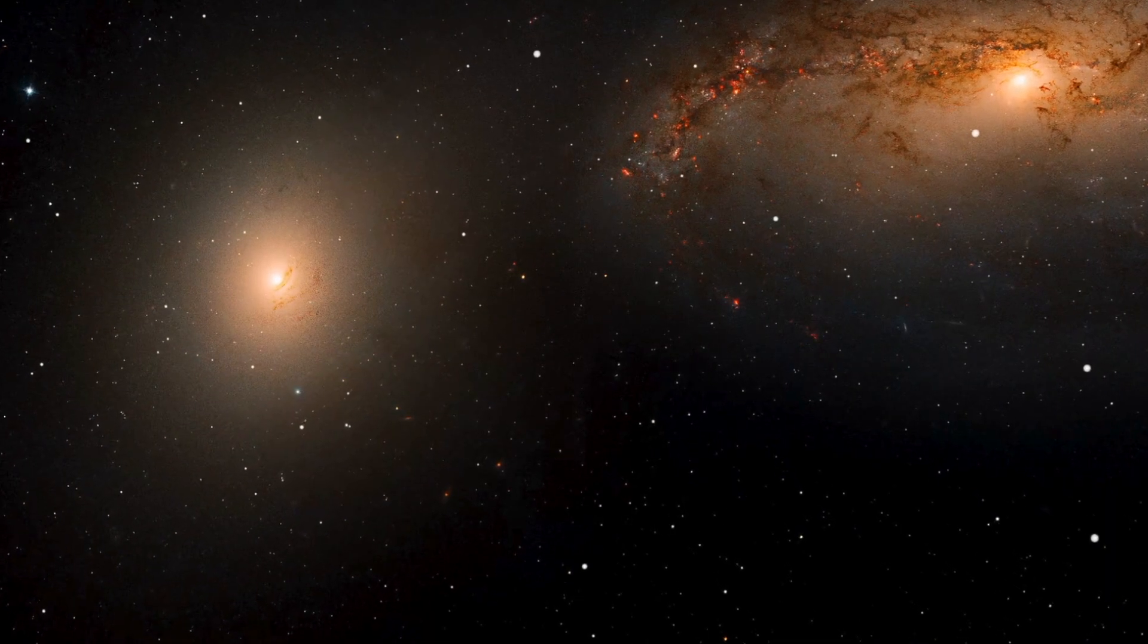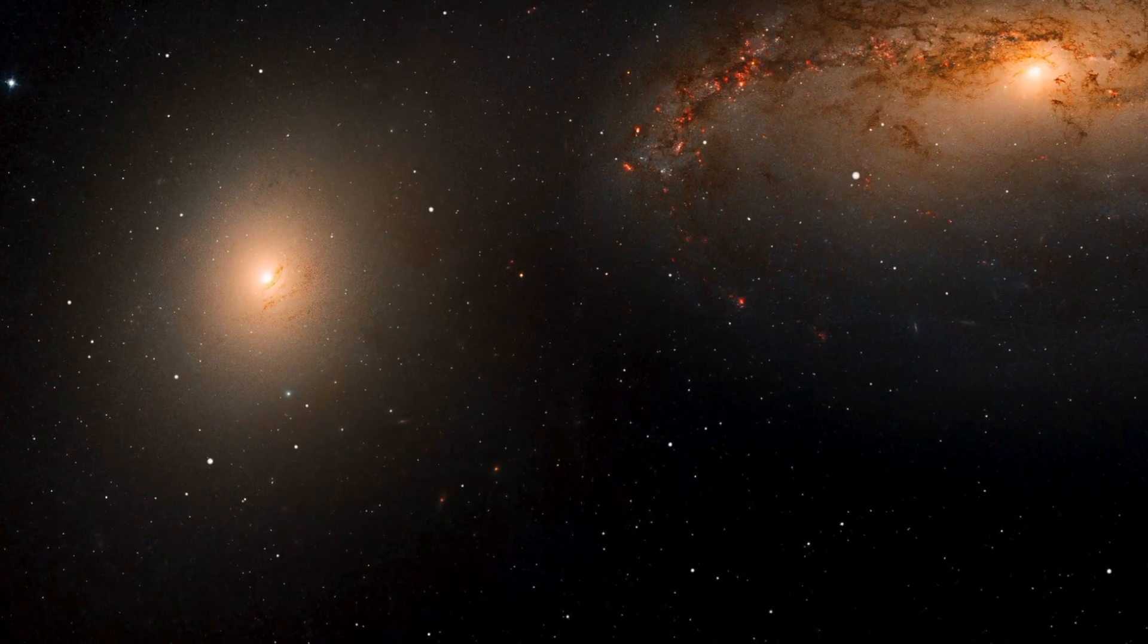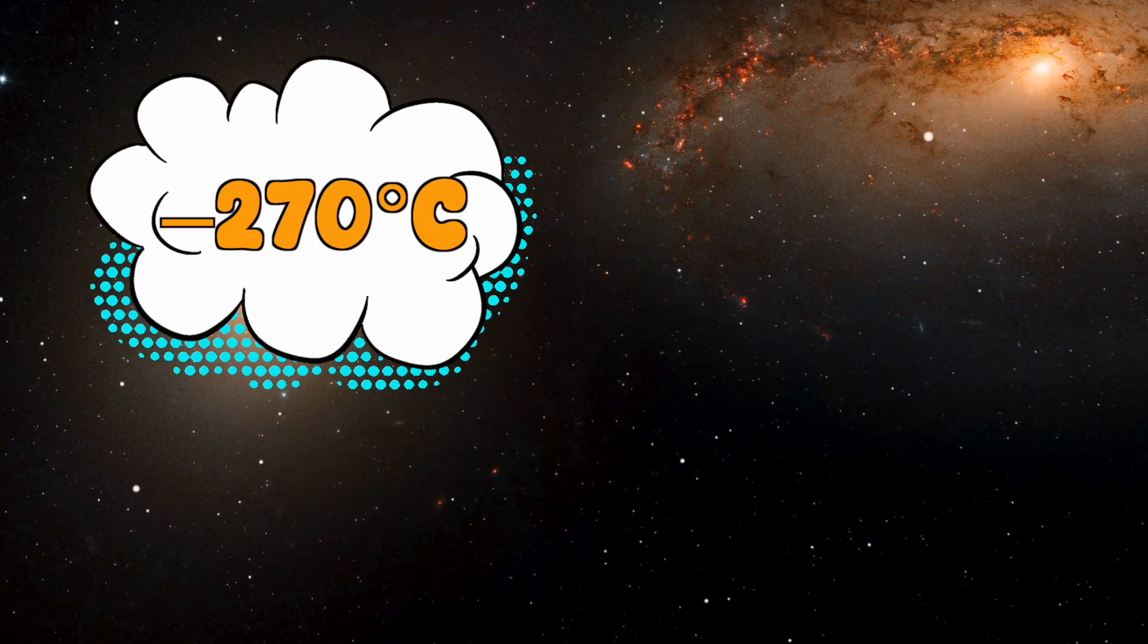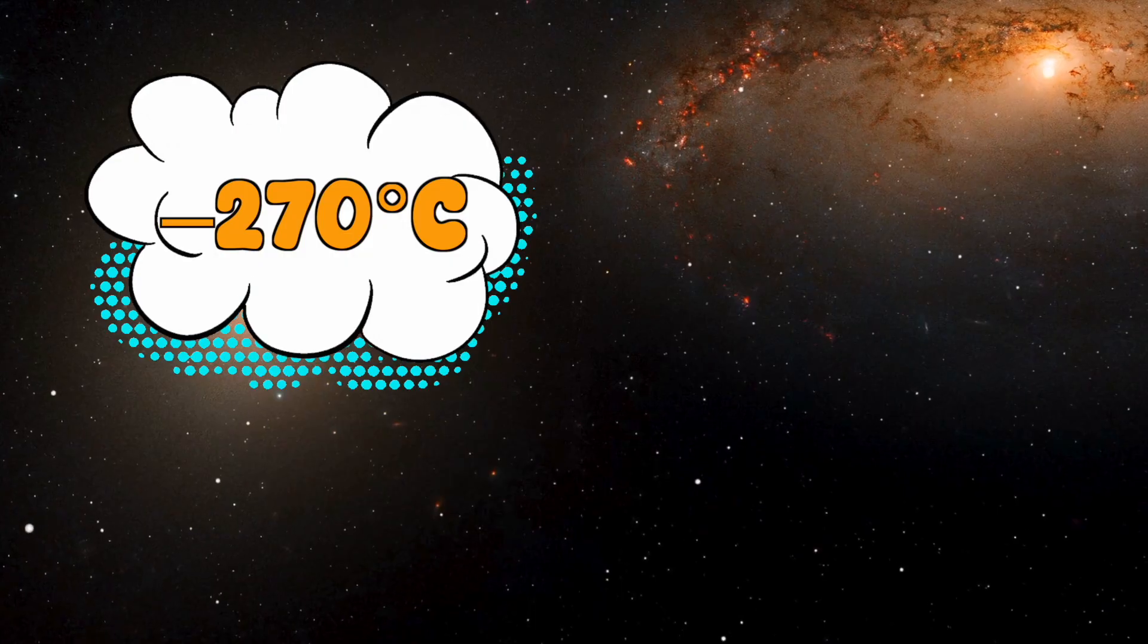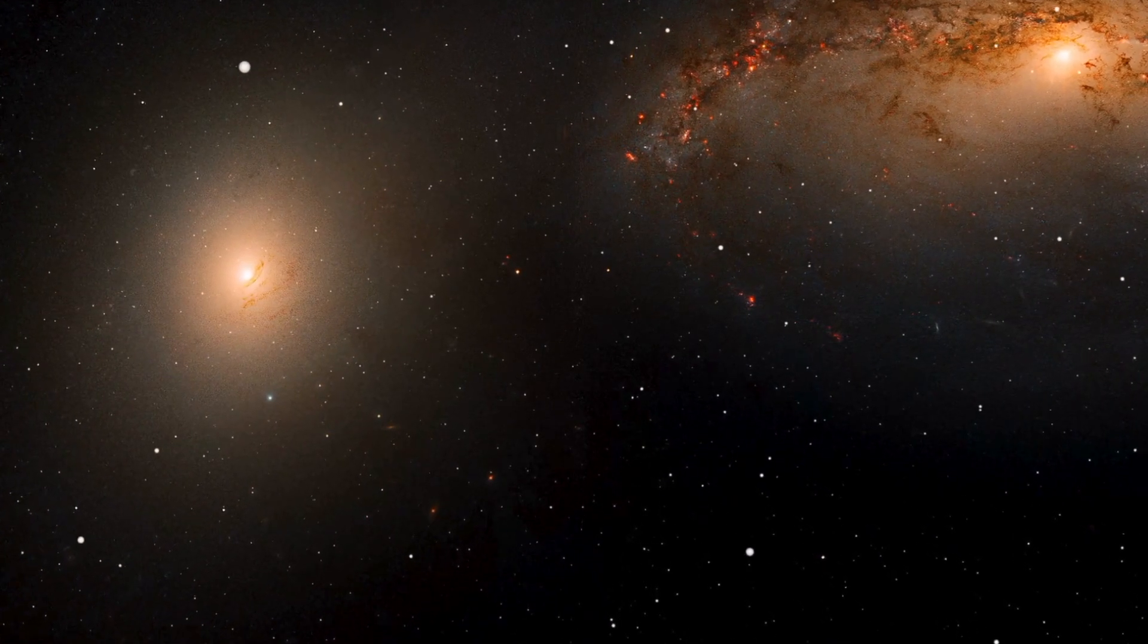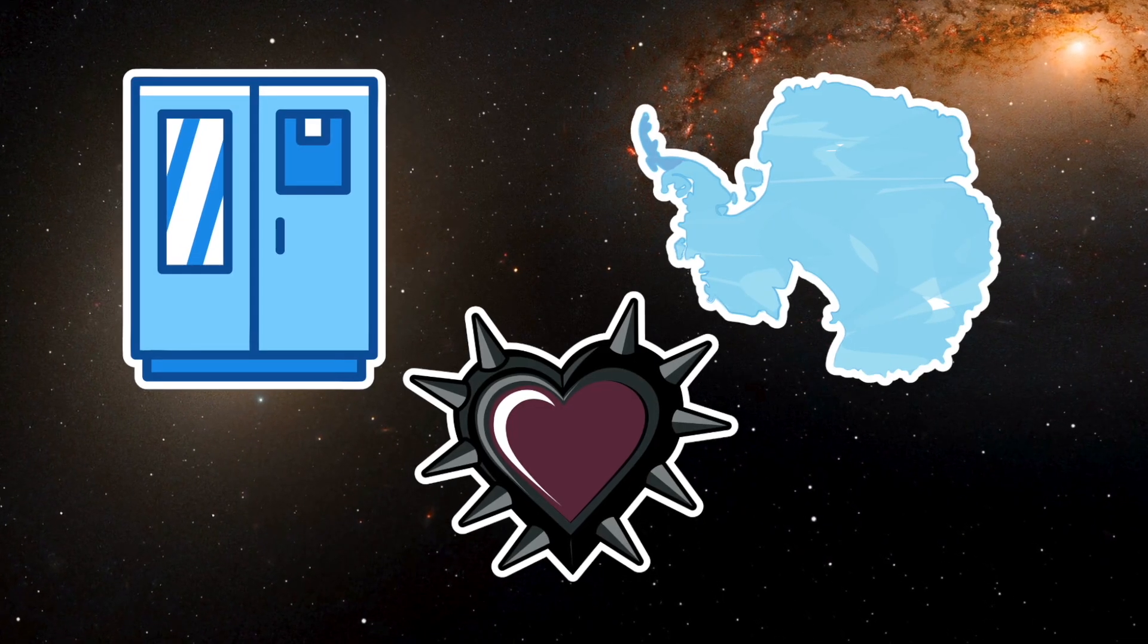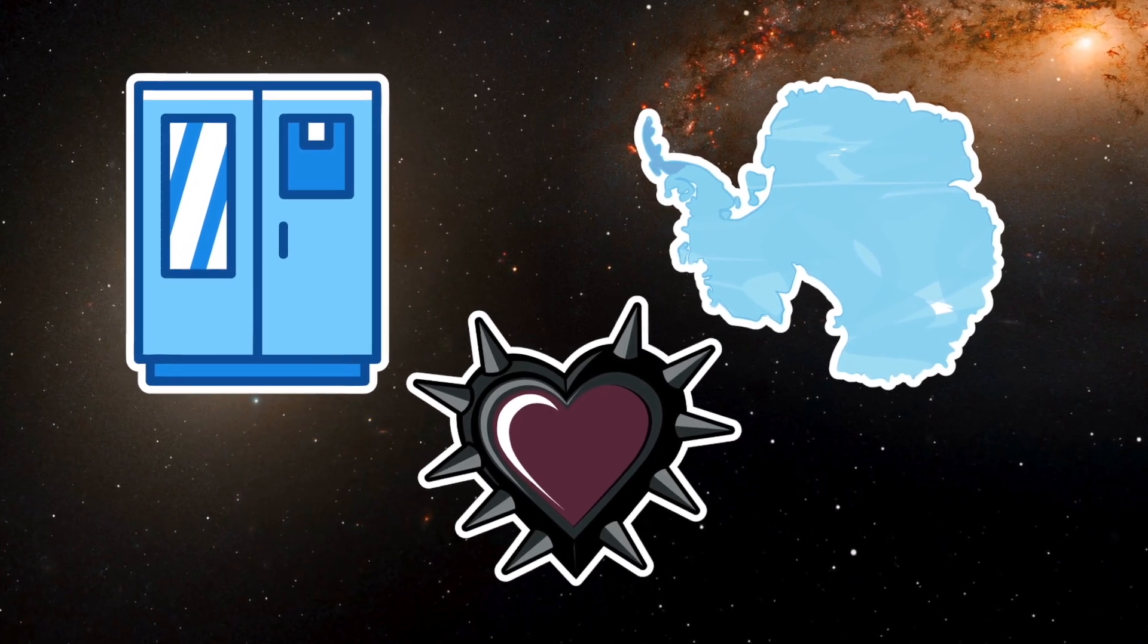Here's the fun part. In the shade of space, temperatures drop to around minus 270 degrees Celsius, just a hair above absolute zero, the coldest possible temperature. That's colder than your freezer, Antarctica, and your ex's heart combined.